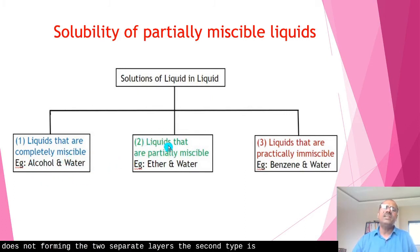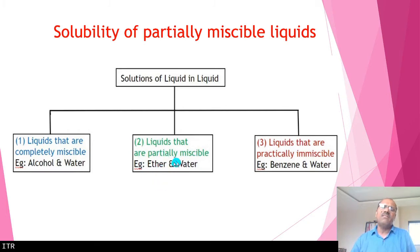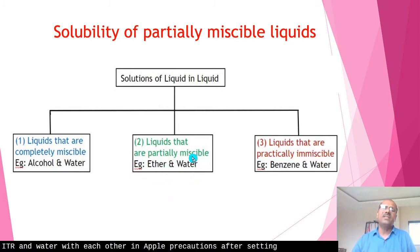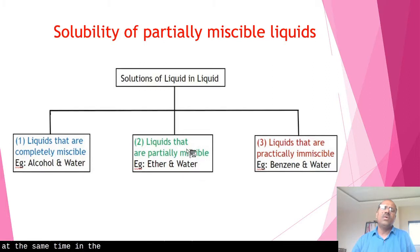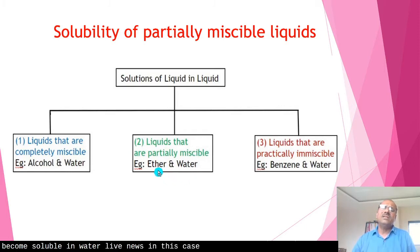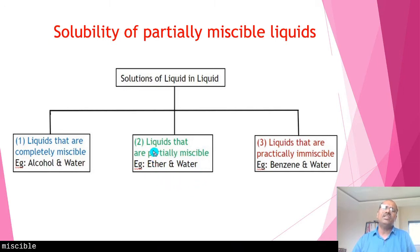The second type is liquids that are partially miscible. Whenever we add ether and water in equal proportions and shake vigorously, they form two separate layers. However, in the ether layer some quantity of water becomes soluble, and at the same time in the water layer some quantity of ether becomes soluble. So ether and water show partial miscibility with each other.